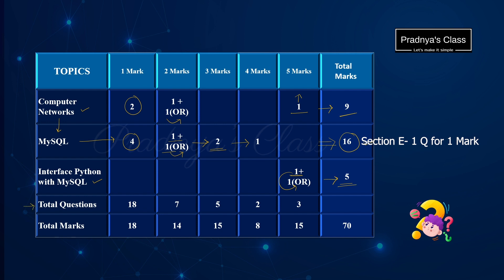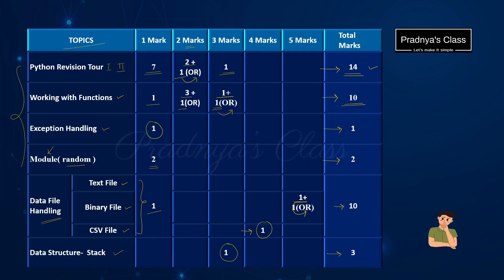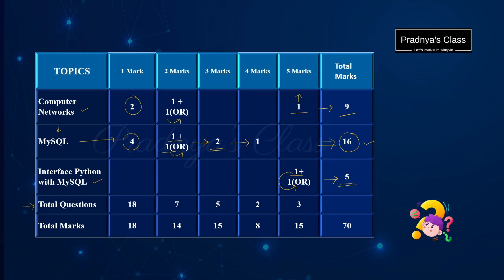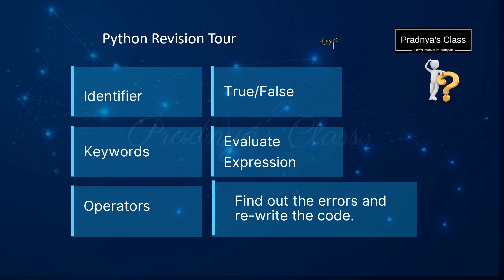So here are the total number of questions from each section. Now we need to concentrate on the chapters which carry higher weightage. Here is the distribution of marks and weightage of each chapter. Let's highlight the specific topics within each chapter that have been consistently asked in previous years. By focusing on these areas, you can prioritize your study time effectively. Remember, it's not just about studying hard, it's about studying smart.